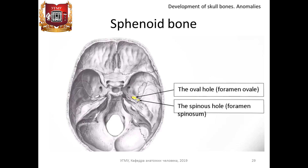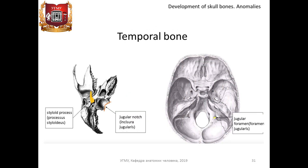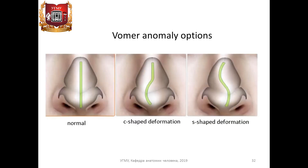Sphenoid bone: the oval and spinosum foramina sometimes merge into one common foramen, and the foramen spinosum may be absent. Frontal bone: in about 10% of cases, the frontal bone consists of two parts, between which the frontal suture is preserved; the size of the frontal sinus is variable and sometimes it is absent. Temporal bone: the jugular notch of the temporal bone can be divided into two parts by the jugular process; if there is a similar process in the jugular notch of the occipital bone, a double jugular opening is formed. The styloid process of the temporal bone may be absent, but more often it is long and may even reach the hyoid bone when the stylohyoid ligament is ossified.